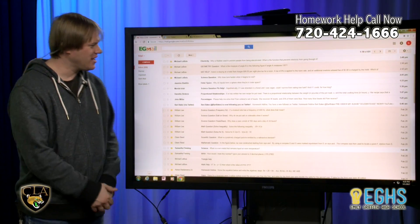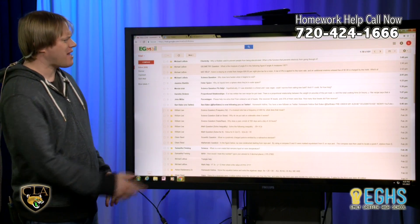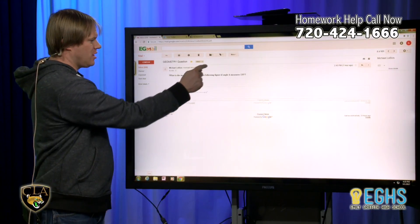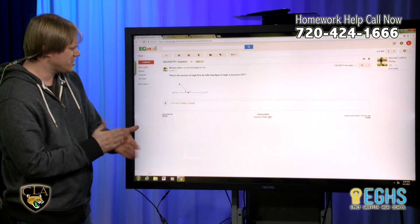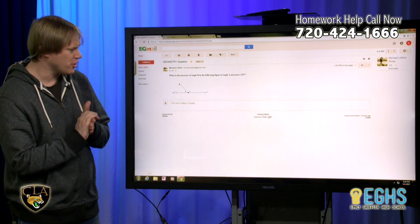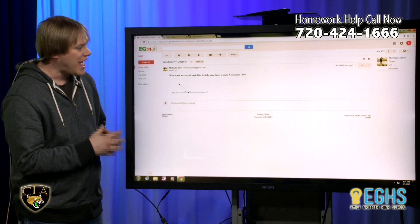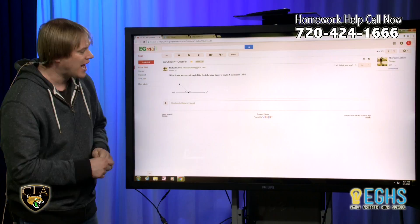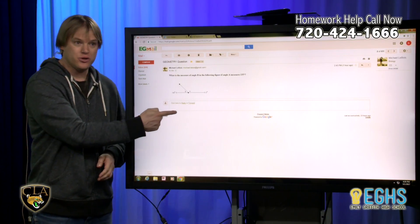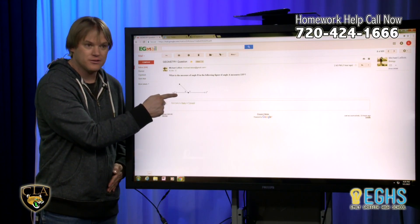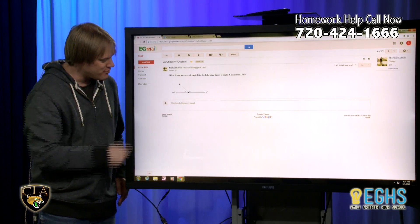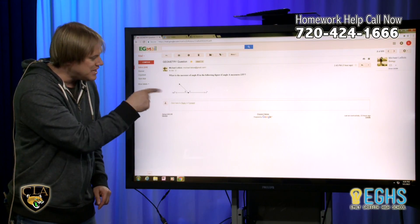Let's take to the board over here. I believe we have a geometry question here. Now, this is kind of an interesting question. It says, what is the measure of angle B in the following figure if angle A measures 135 degrees? And you can see right here, we got a little diagram right there with angle B and A.